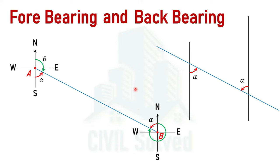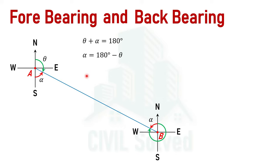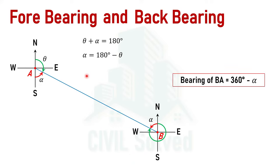The bearing of AB is given as theta and we want to calculate the bearing of BA. To do so, we need the value of alpha. From the diagram, the addition of theta and alpha equals 180 degrees, so alpha equals 180 minus theta. Since the total angle in a complete circle is 360 degrees, if we subtract alpha from 360 that gives us the bearing of BA. So the bearing of BA equals 360 minus alpha.